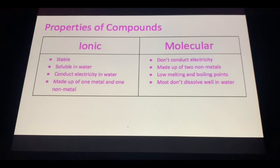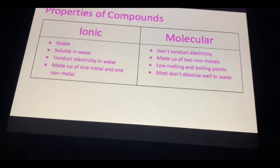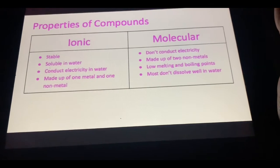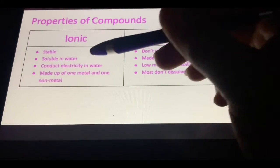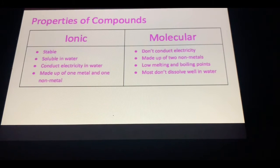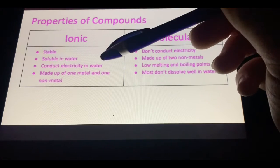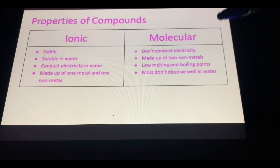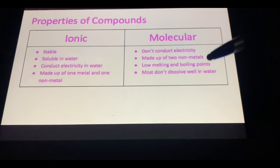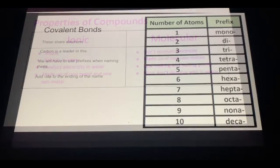Properties of compounds. In your lab, I wanted you to come up with some properties. Soluble in water is a primary one. Ionics will dissolve in water. Molecular or covalent substances will not. Ionic will conduct electricity in water. Molecular covalents will not. These are made up of one metal and one non-metal. These have low melting points and boiling points.